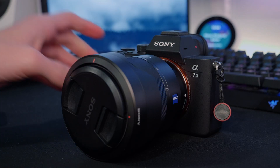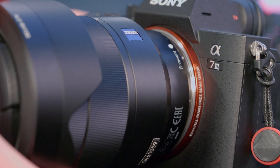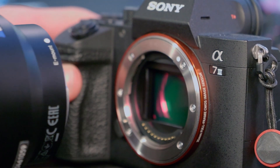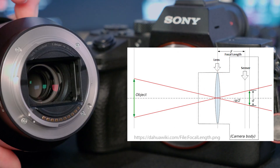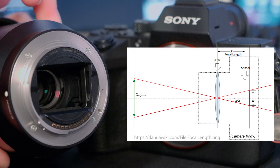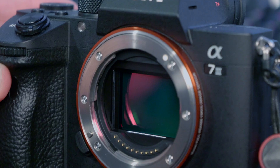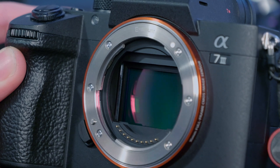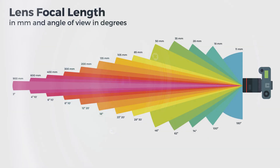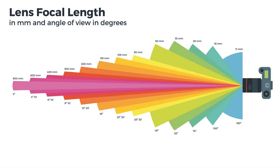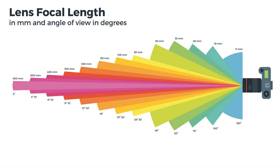When light rays hit a camera lens, they converge at a focal point, and the focal length refers to the distance from the focal point of the lens to the camera sensor — or in older cameras, the film. As the focal length increases, the angle of view decreases and the foreshortening decreases as well, and vice versa.